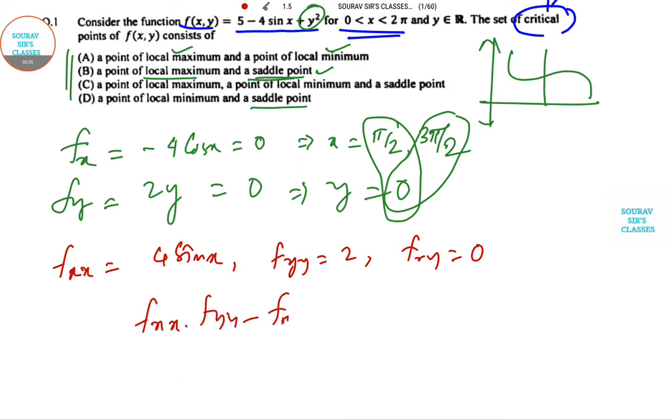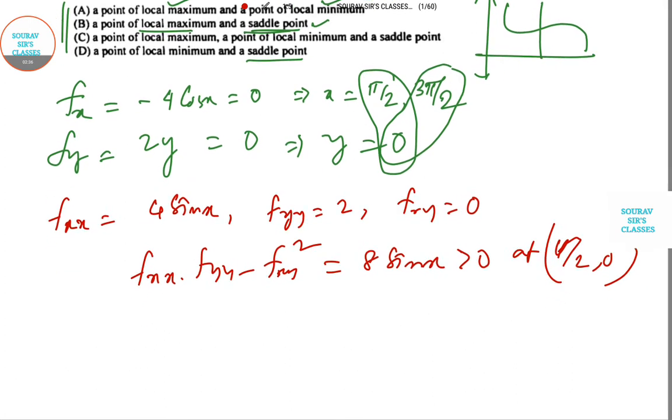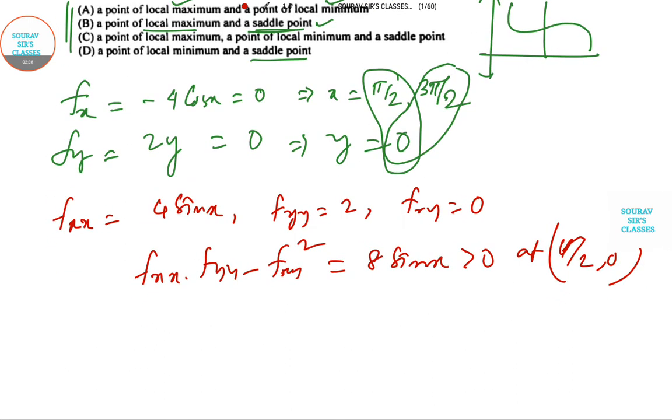Remember this is important. At (π/2, 0), fxx = 4sin(π/2) is positive, and fyy is also positive. According to the second derivative test, this indicates a local minimum.